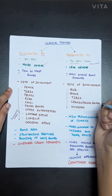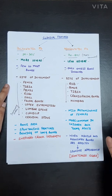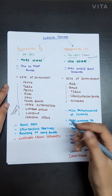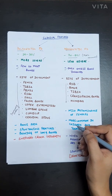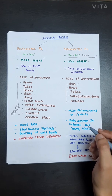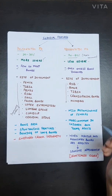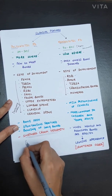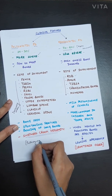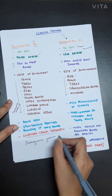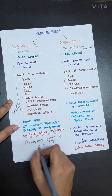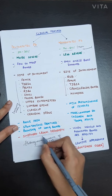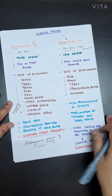In polyostotic fibrous dysplasia, the signs and symptoms include bone pain, spontaneous fractures, and bowing of long bones, as the bone is very fragile and cannot bear weight. There is also curvature of the femoral neck and proximal shaft, which leads to shepherd's crook deformity. This is a pathognomonic feature of fibrous dysplasia, meaning this deformity is only seen in this disease.